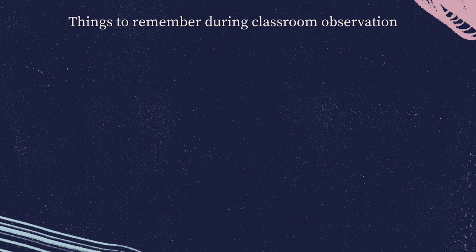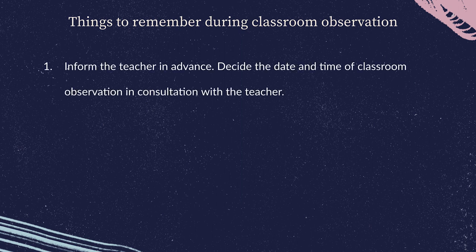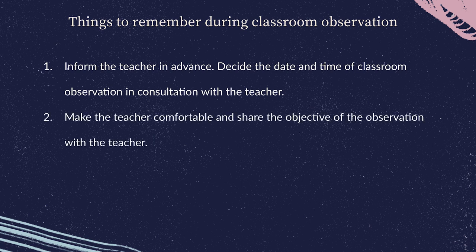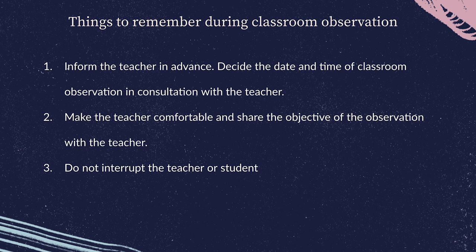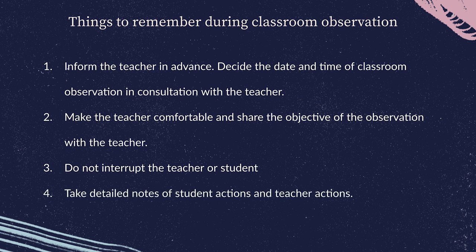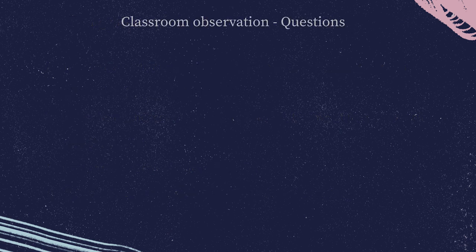In classroom observation, here is what you should typically do. First, inform the teacher in advance that you would like to visit their class. Second, decide the date and time of classroom observation in consultation with the teacher. Arrive 10 to 15 minutes early, make the teacher comfortable, and share the objectives of the observation with the teacher. During the observation, sit on the last bench so that students are not distracted by your presence. Make sure that you do not interrupt the teacher or students during the class, and take detailed notes of student actions and teacher actions.